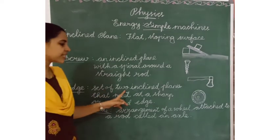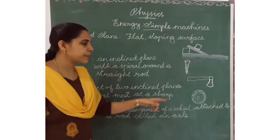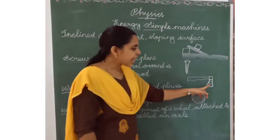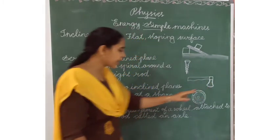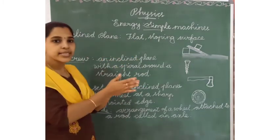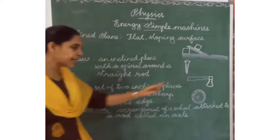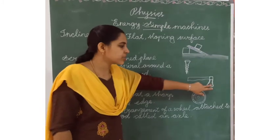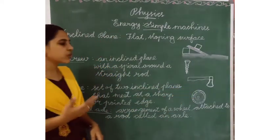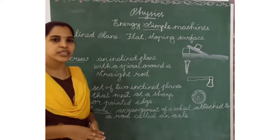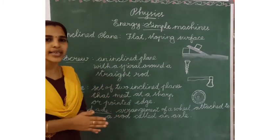Next one is Wedge. It is a set of two inclined planes that meet at a sharp or pointed edge. For example, an axe — it is thick on one side and very sharp on the other side. Both sides are like inclined planes meeting at a sharp end. Examples of wedges include a knife, an axe, and a fork — one side is thick and the other side is very sharp. Wedges are used to split objects into two.